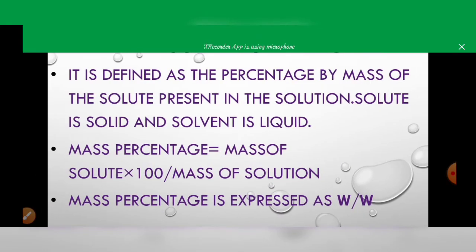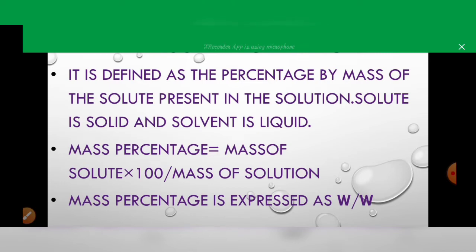Mass percentage is defined as the percentage by mass of the solute present in the solution. Since the solute is solid, it is measured in kilograms or grams, and the solvent is liquid. The formula is: mass percentage = (mass of solute × 100) / mass of solution. This is expressed as w/w, that is, weight by weight.